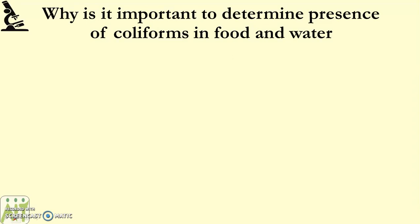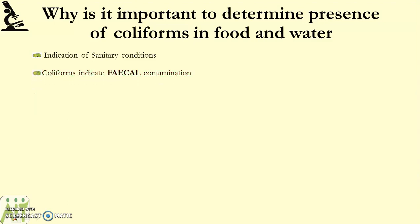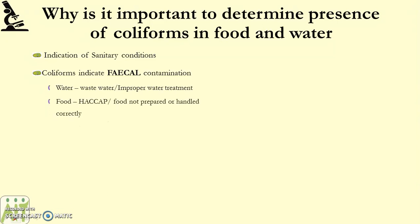Why is it important to determine the presence of coliforms in food and water? As mentioned, it's an indication of sanitary conditions. Coliforms indicate fecal contamination — if present in water, it means wastewater is entering the water supply or the water wasn't treated properly. If present in food, HACCP — Hazard Analysis Critical Control Point — was not followed and the food was not prepared or handled correctly.